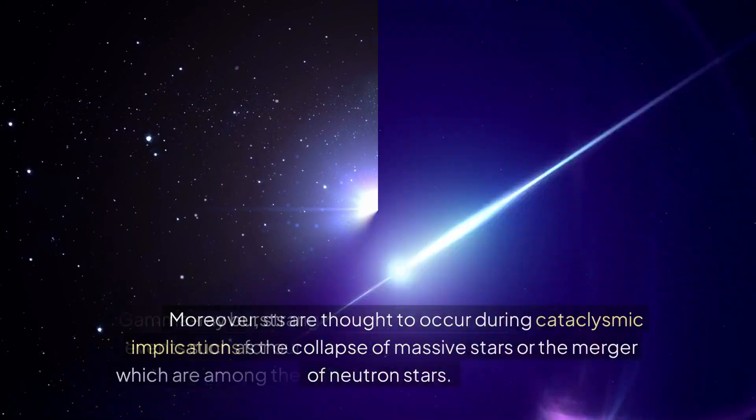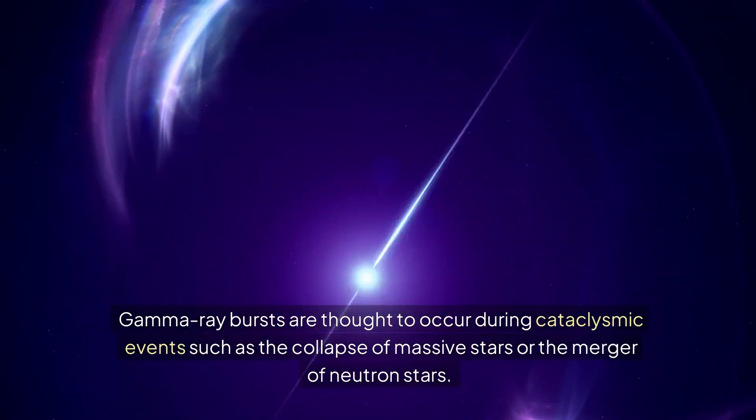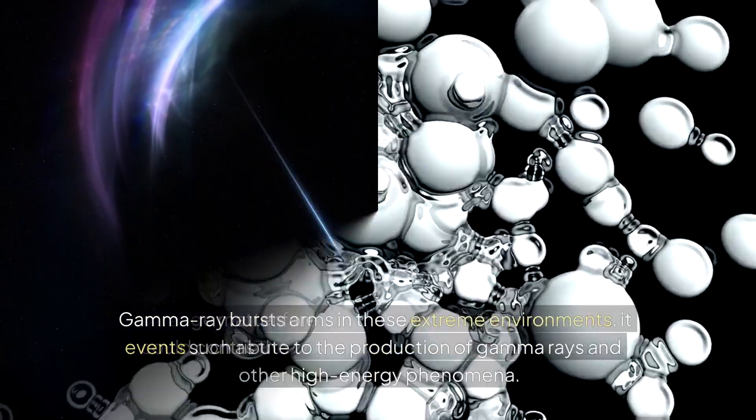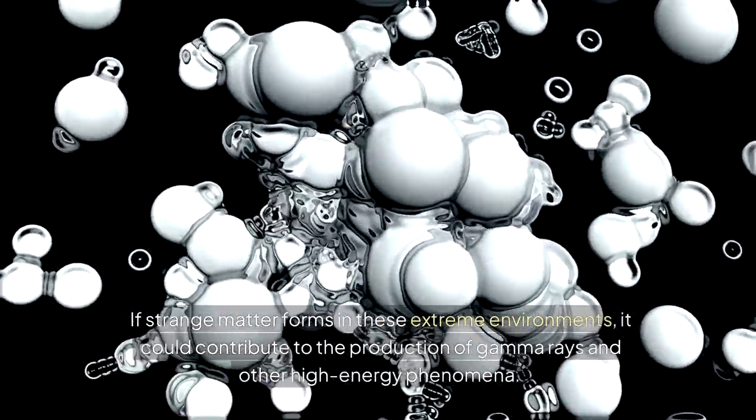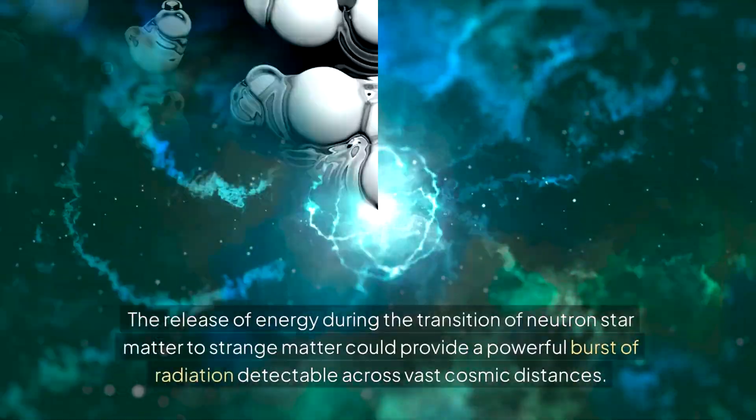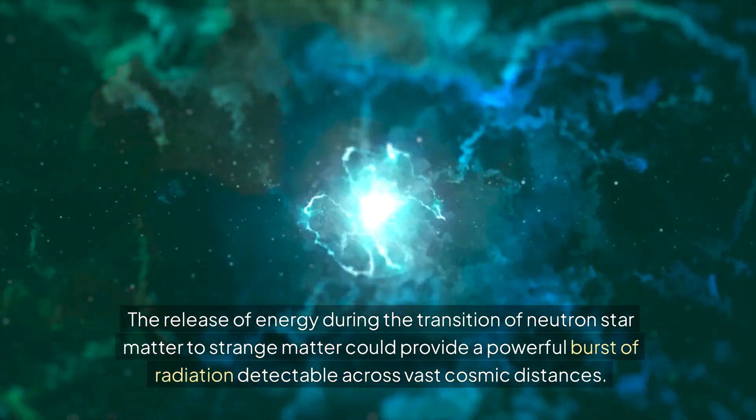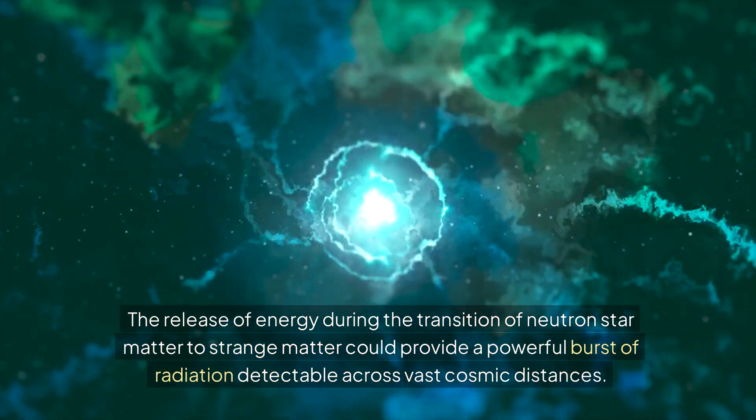Gamma-ray bursts are thought to occur during cataclysmic events such as the collapse of massive stars or the merger of neutron stars. If strange matter forms in these extreme environments, it could contribute to the production of gamma rays and other high-energy phenomena. The release of energy during the transition of neutron star matter to strange matter could provide a powerful burst of radiation detectable across vast cosmic distances.